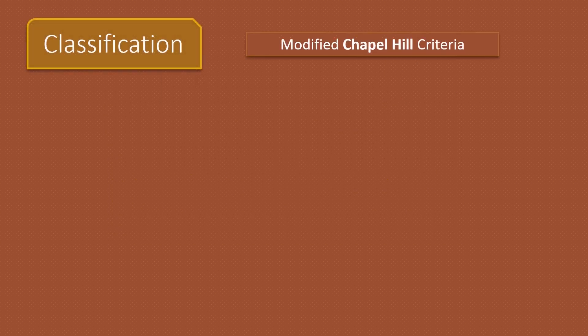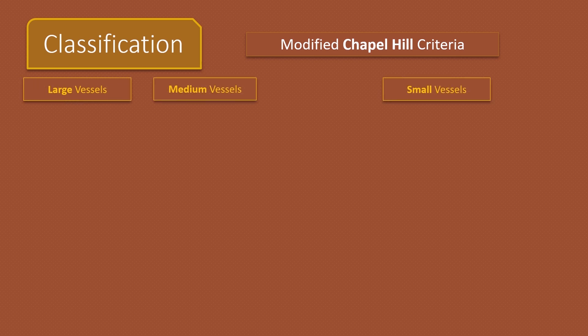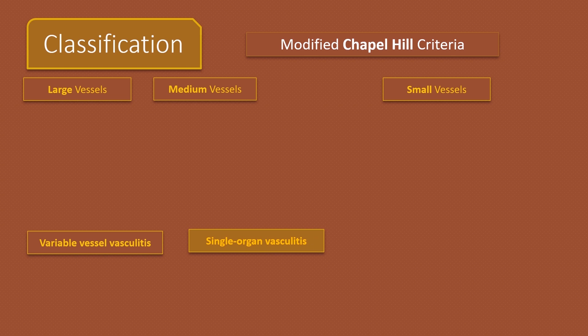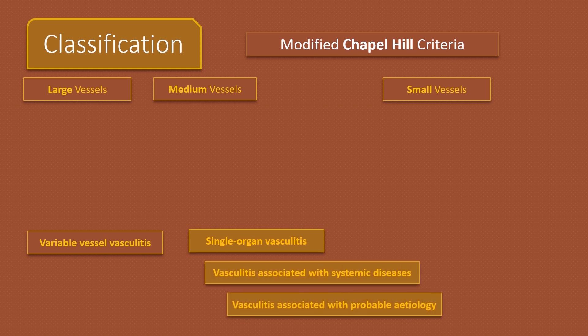Vasculitis are categorized using the modified Chapel Hill criteria. It broadly classifies vasculitis into large, medium, small, and variable vessel vasculitis. Then there are three other categories which are not based on vessel size but based on organ involved and etiology: single organ vasculitis, vasculitis associated with systemic diseases, and vasculitis associated with probable etiology.